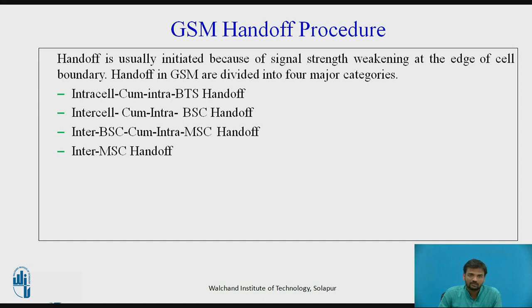The next category is inter-BSC or intra-MSC handoff. A call connection is changed between two cells served by different BSCs but operating in the same MSC. When the measured received signal strength at the mobile subscriber falls below the threshold value, it informs the serving BSC, which initiates the handoff command to the MSC of that area. The MSC relays the handoff request to the new BSC and sends a channel activation request through the BTS. The BTS provides the MSC with a list of available channels of the neighbouring cell via the BCCH (Broadcast Control Channel). The mobile subscriber monitors the received signal strength from the BCCH of these neighbouring cells and reports this measurement data to the MSC using SACCH. This is called mobile-assisted handoff.